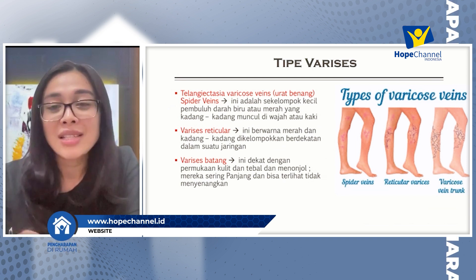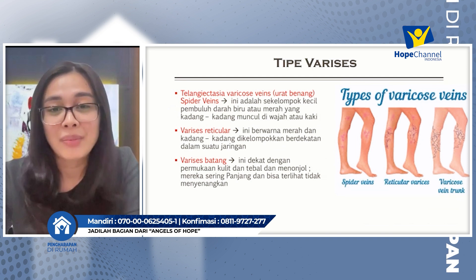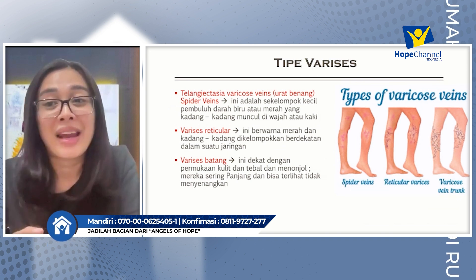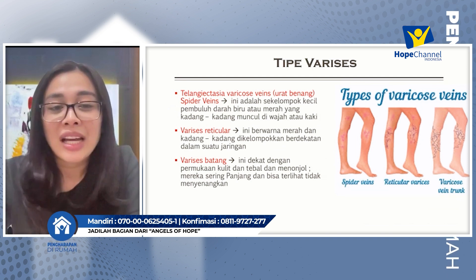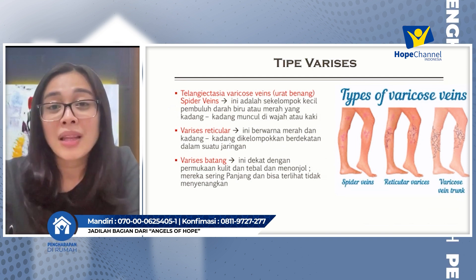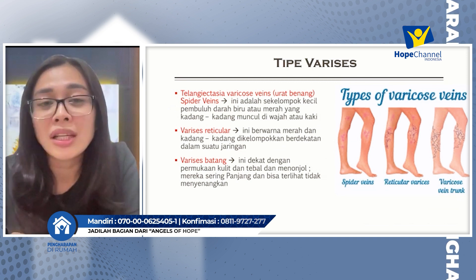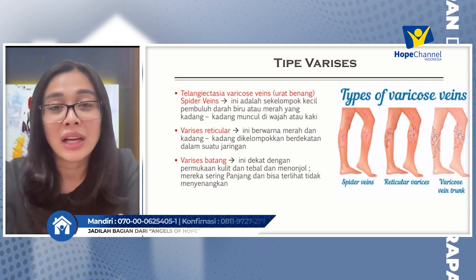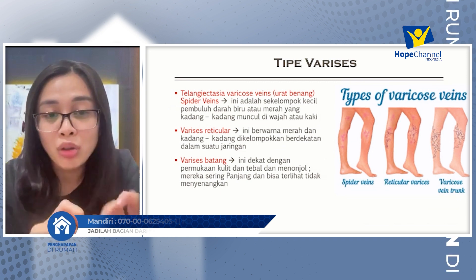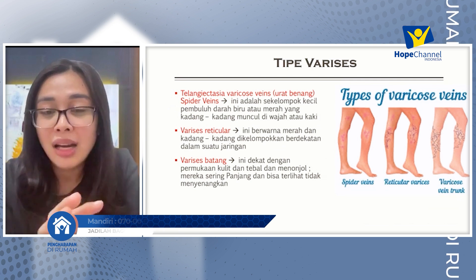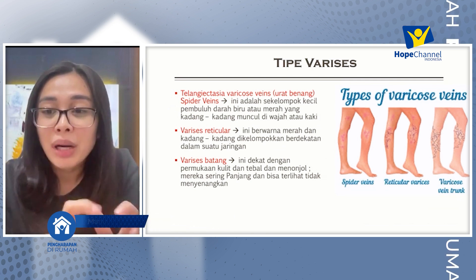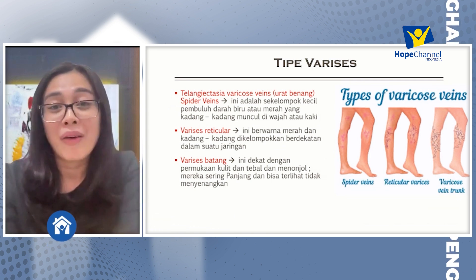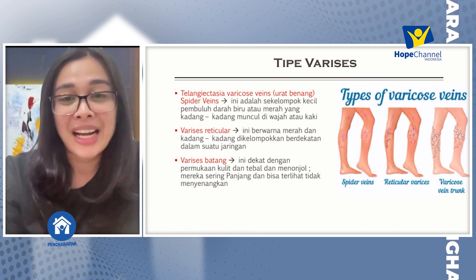Kemudian ada yang disebut dengan varises retikular, biasanya ini warnanya agak sedikit kemerahan. Kemudian yang terakhir adalah varises batang. Mungkin ini yang sering kita lihat pada pasien dengan varises, karena dia akan menonjol besar kemudian berlekuk-lekuk, biasanya pada daerah tungkai bawah atau pada daerah kaki.